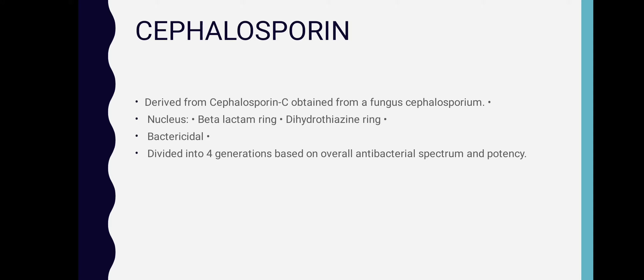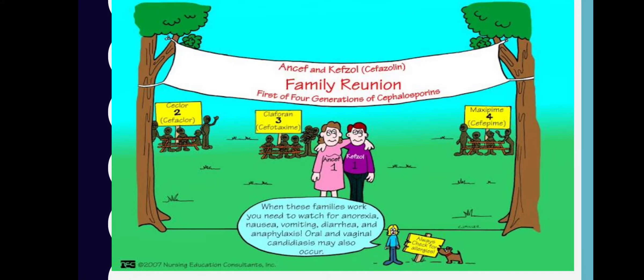Cephalosporins are derived from cephalosporin C, obtained from the fungus Cephalosporium, and they contain a beta-lactam ring and dihydrothiazine ring as their nucleus. They are bactericidal and divided into five generations based on overall antibacterial spectrum and potency.